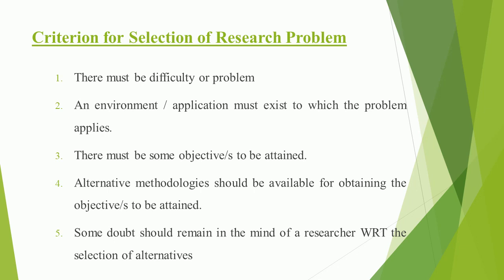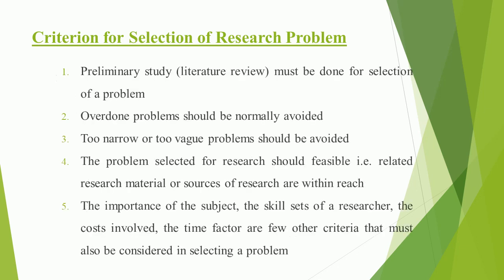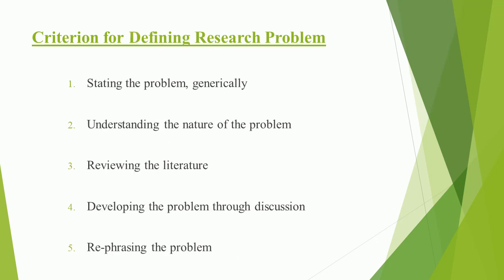Criterion for selection of a research problem: There must be a difficulty or problem, and an environment or application to which it applies. There must be objectives to be attained, and alternative methodologies should be available. A preliminary study and literature review must be done. Overdone, too narrow, or too vague problems should be avoided. The problem should be feasible — related research material within reach. The importance of the subject, researcher's skill sets, costs involved, and time factor must also be considered.